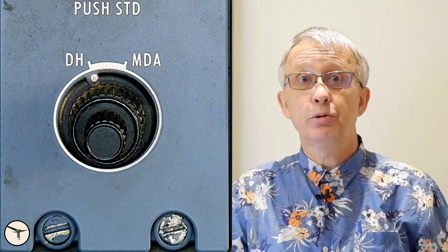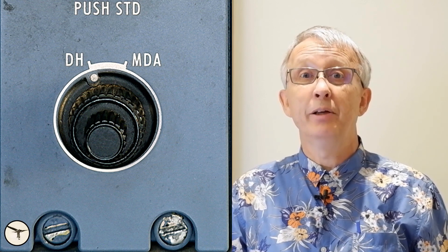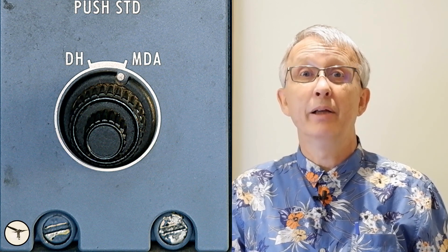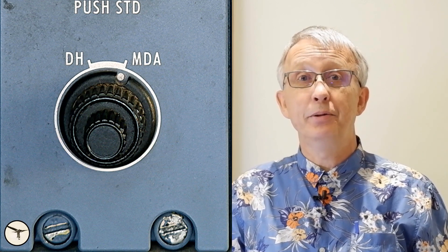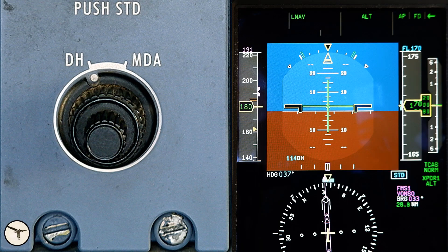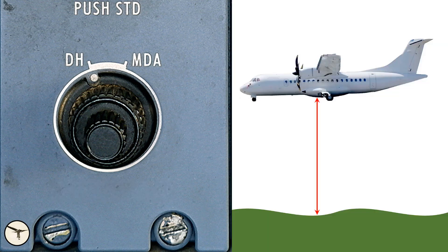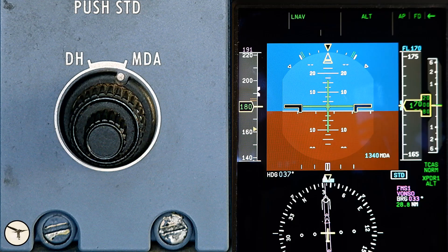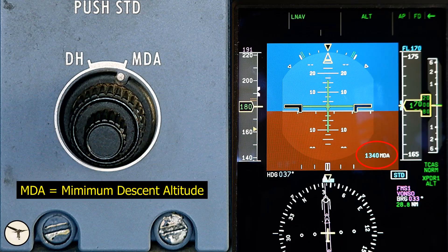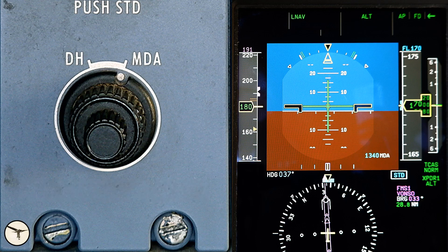The inner knob is used to switch between DH and MDA, and the outer knob is used to set the value. DH is the abbreviation for decision height. This function is coupled to the radio altimeter, which measures the distance from the aircraft down to the ground. MDA means minimum descent altitude, and this function is coupled to the barometric altimeter.